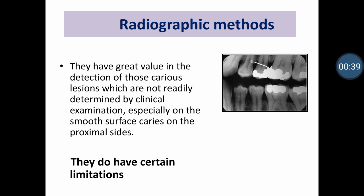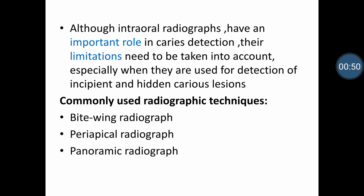Radiographs do have certain limitations because they are two-dimensional images and would not give a complete caries extension three-dimensionally. Although intraoral radiographs are generally used to determine the caries extent occlusally from the enamel to dentin towards the pulp, they play a very important role in caries detection. Their limitations need to be taken into account especially when used for detection of incipient and hidden caries lesions.